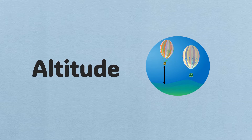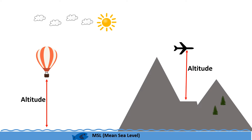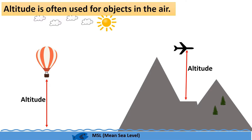Altitude is a term used to describe the vertical distance of an object or location above a specific reference point, often measured from sea level or the surface of the earth. It is a measure of height in the vertical dimension. Altitude is often used for objects in the air like airplanes or balloons, and it is used in aviation, meteorology, and astronomy.